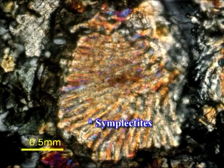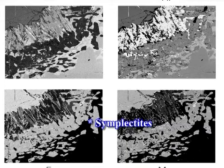Coronas form during both prograde and retrograde metamorphism. Atoll texture: where the core of a mineral is dissolved or replaced, leaving behind a surviving rim. Such textures usually form due to an original compositional zoning within the mineral with the replaced core. Intergrowth texture includes symplectites, which are also a kind of reaction texture. Symplectites are irregular, fine-grained mineral intergrowths that form as a result of a reaction that did not go to completion.